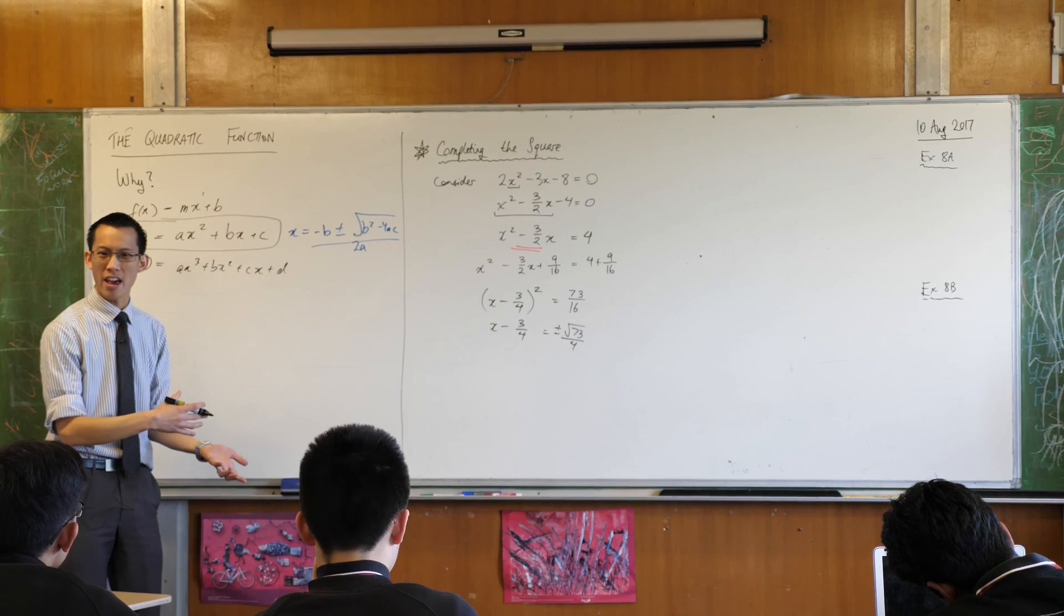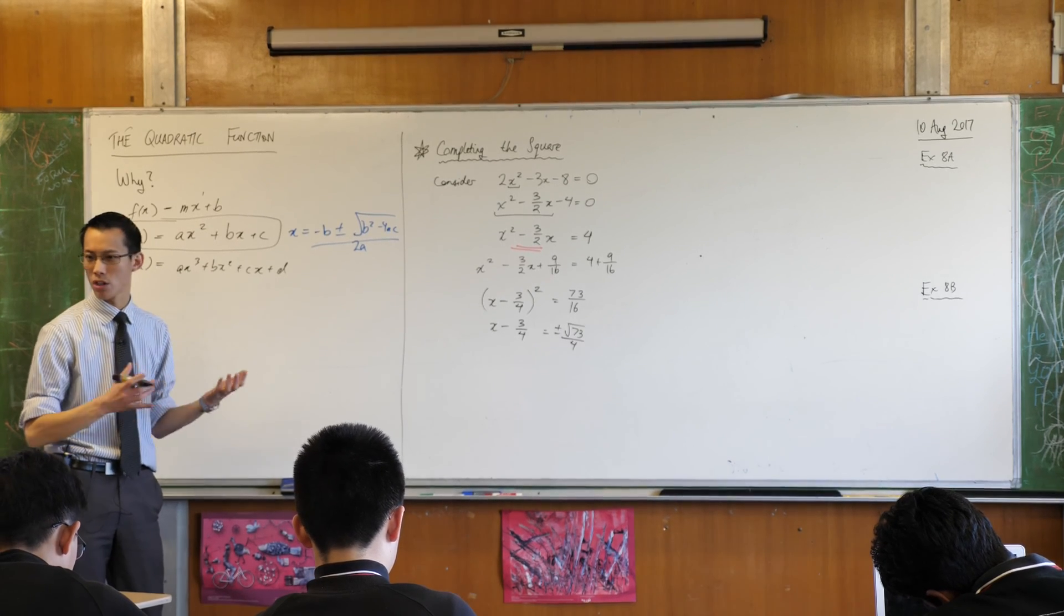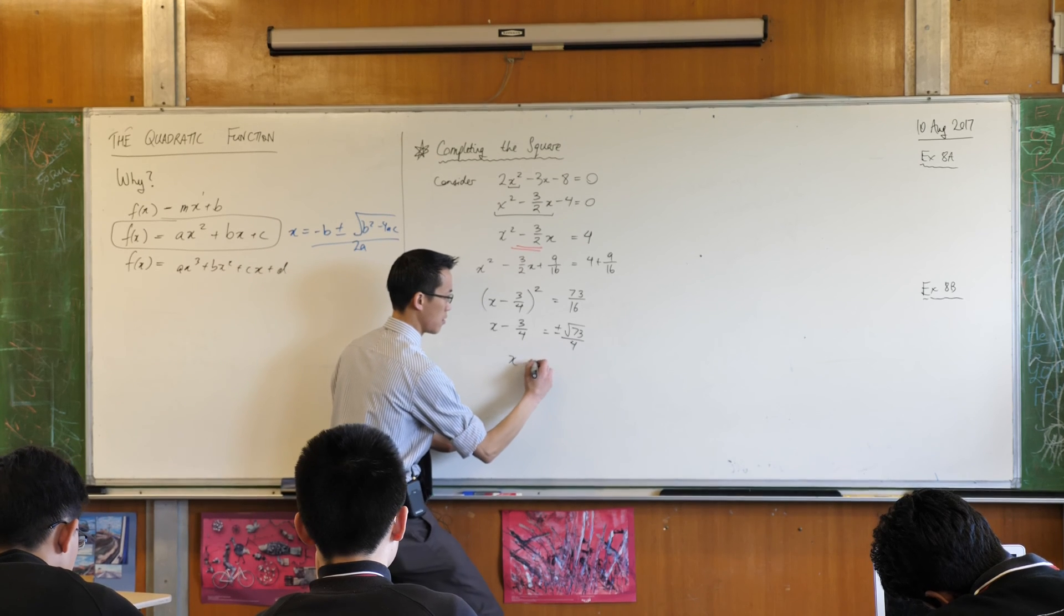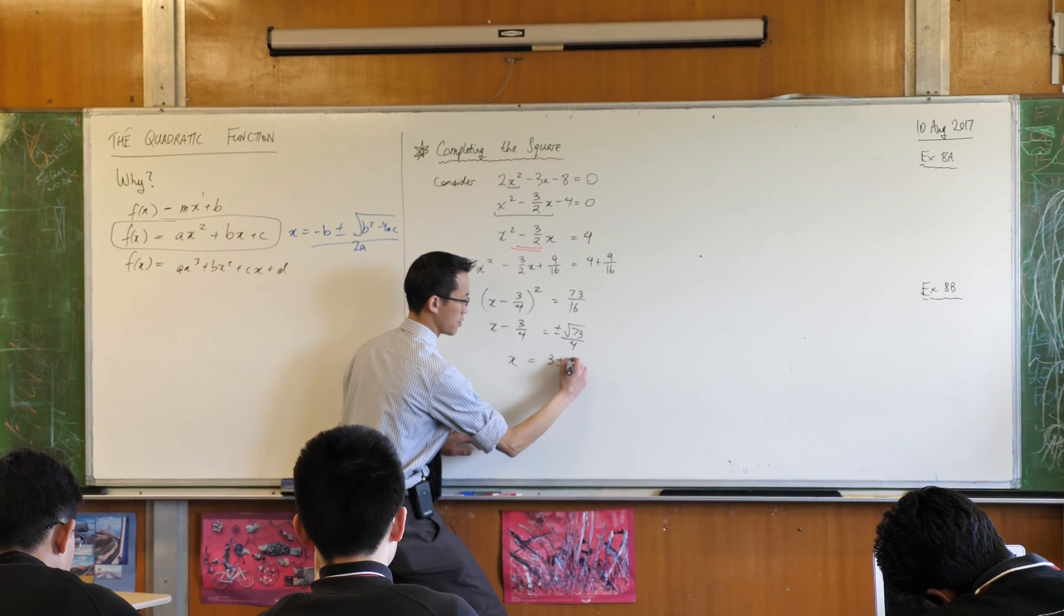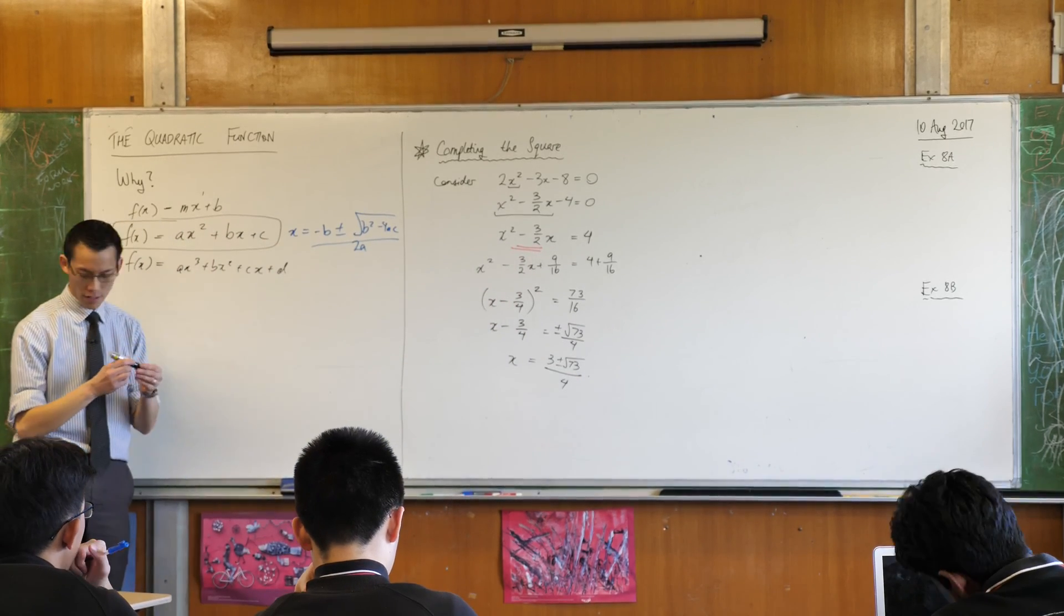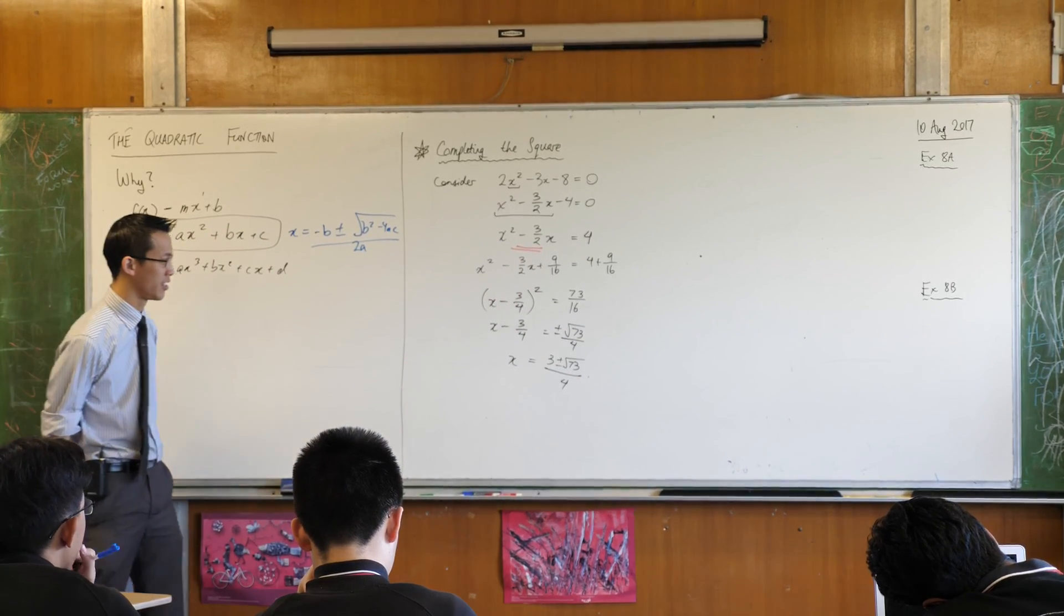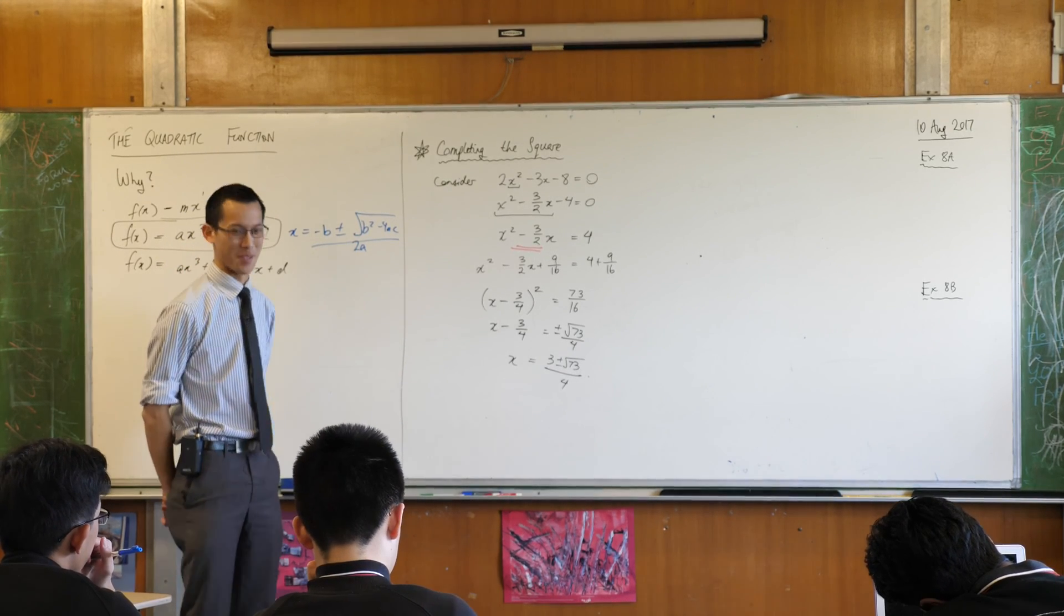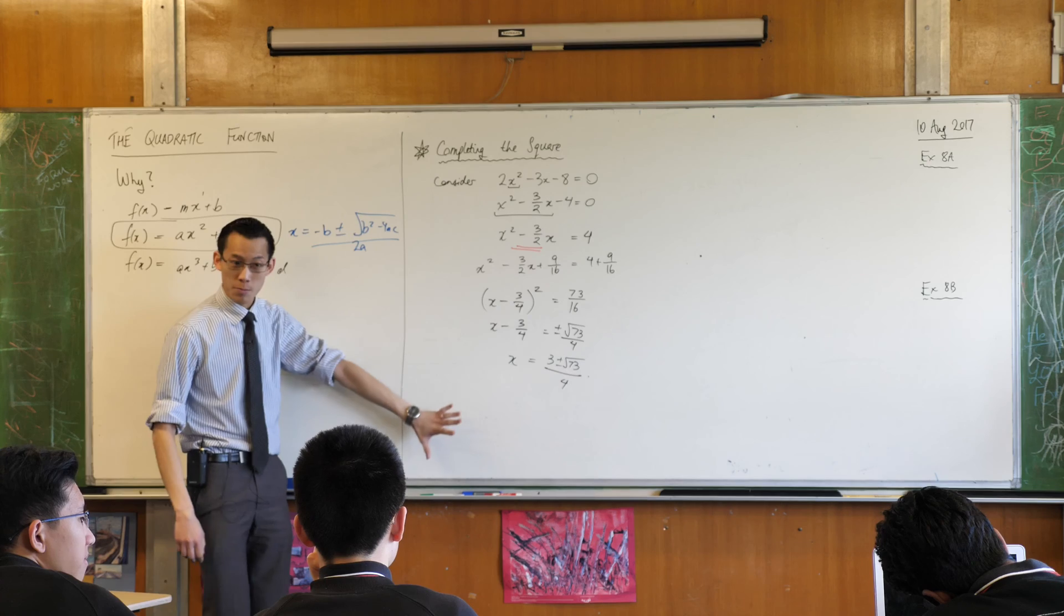And now I'm pretty much there, aren't I? I'm only one line away, what shall I do to both sides to finish? I'll add 3 quarters. So I'm going to get x = 3/4 plus or minus root 73 over 4. Ta-da, and there are solutions. Thank goodness I didn't keep on staring at that until I guessed 3 plus root 73 on 4, and 3 minus root 73 on 4.